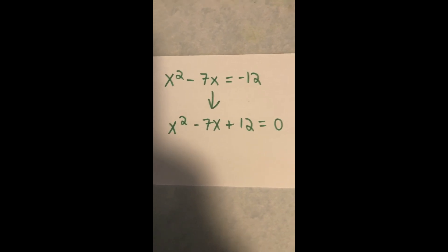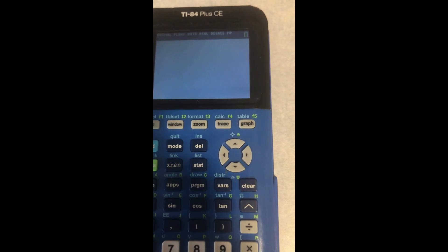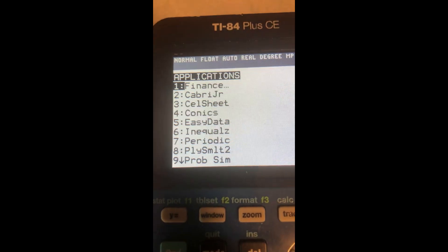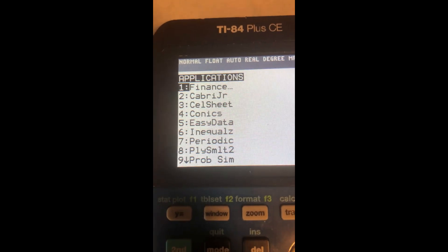We're going to be using apps on this calculator, so I'm going to press the app button right there. I'm going to be looking for the polynomial simultaneous equation tool, and on my calculator it says 8.